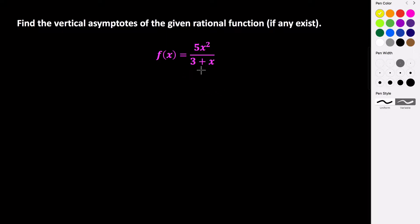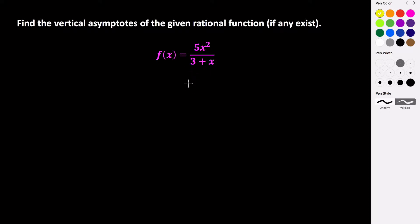Vertical asymptotes occur at domain restrictions of our rational function. We know that in a rational function the denominator is not allowed to equal 0, and what actually happens at the value that makes our denominator 0 is we get a vertical asymptote.